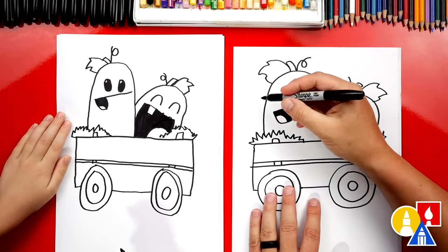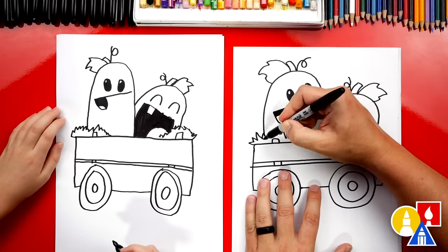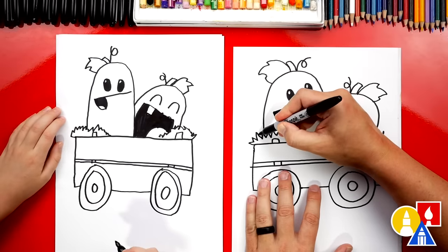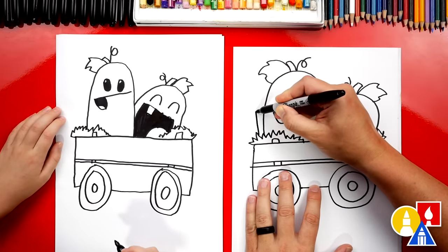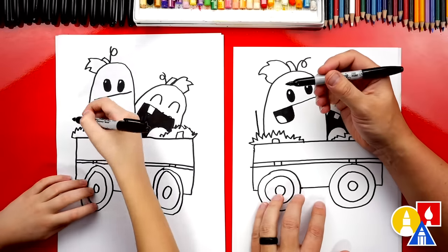Now we could add a handle to our wagon. Let's do that. Let's add a wagon handle. So it actually looks like a wagon, not just a car. Yeah, a weird car.